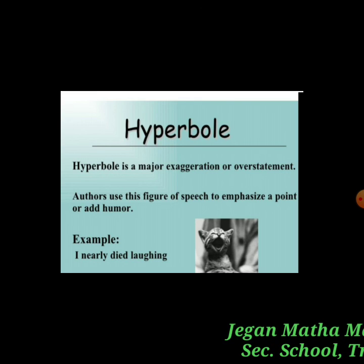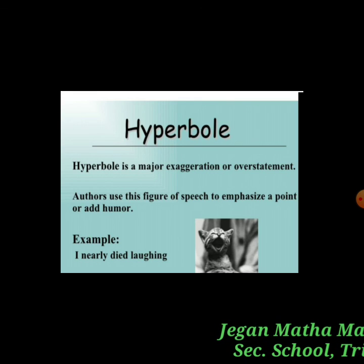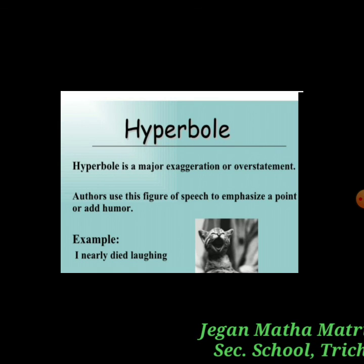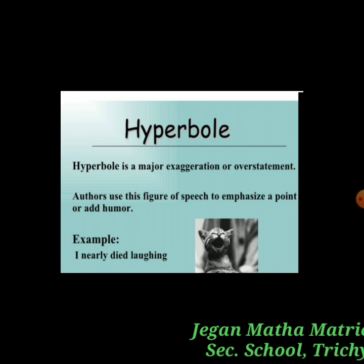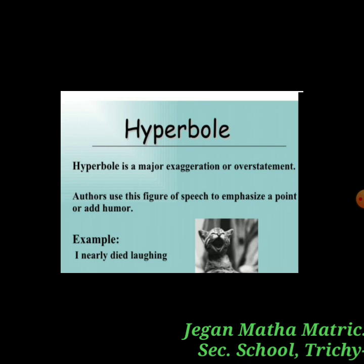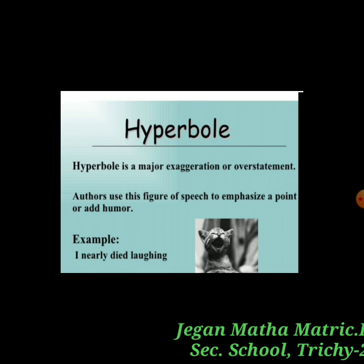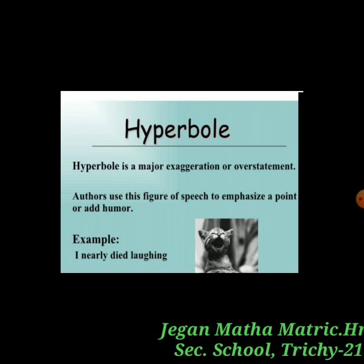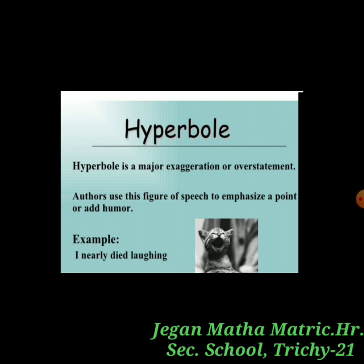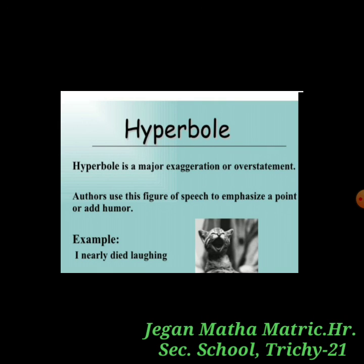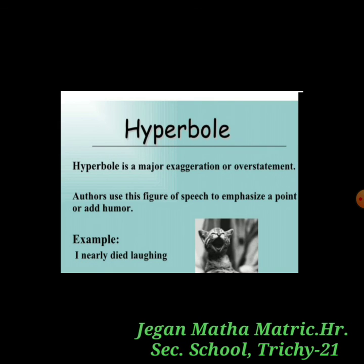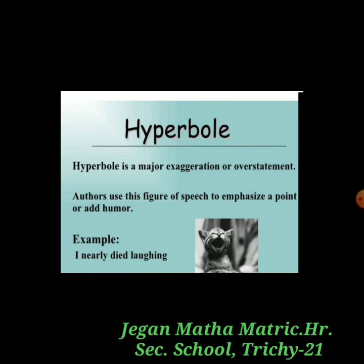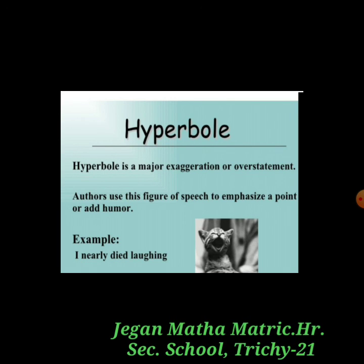The next poetic device is oxymoron. An oxymoron is the use of two words or phrases having opposite meanings. If there is an opposite meaning in the poem lines, it is called an oxymoron. So in summary, we commonly use these figures of speech or poetic devices: simile, metaphor, personification, oxymoron, hyperbole, and alliteration. These are very important poetic devices.